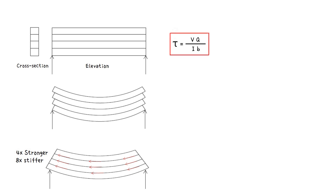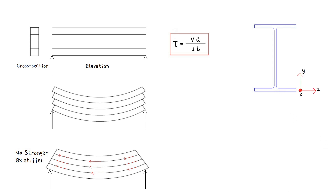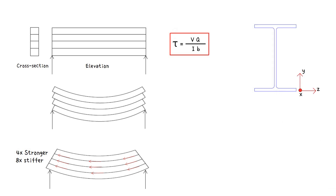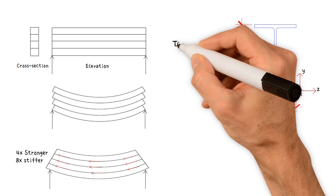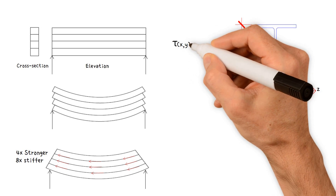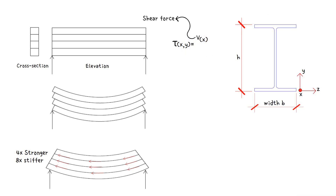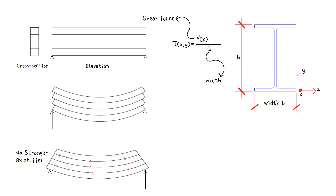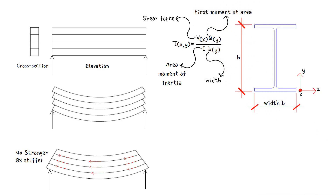This equation can be used to calculate the shear stresses acting on the cross-section. The derivation of the equation is not covered here, but it is based on considering the equilibrium of stresses acting on a small element within the beam. The equation assumes that the shear stress is constant across the width b of the cross-section. So tau is a function of the distance along the beam and the distance above the neutral axis y. V is the shear force acting on the cross-section. b is the width of the cross-section, which can vary with the distance y from the neutral axis. I is the area moment of inertia, which is a constant value calculated based on the shape of the cross-section. And Q is the first moment of area for the portion of the cross-section above the location we want to calculate the shear stress for.